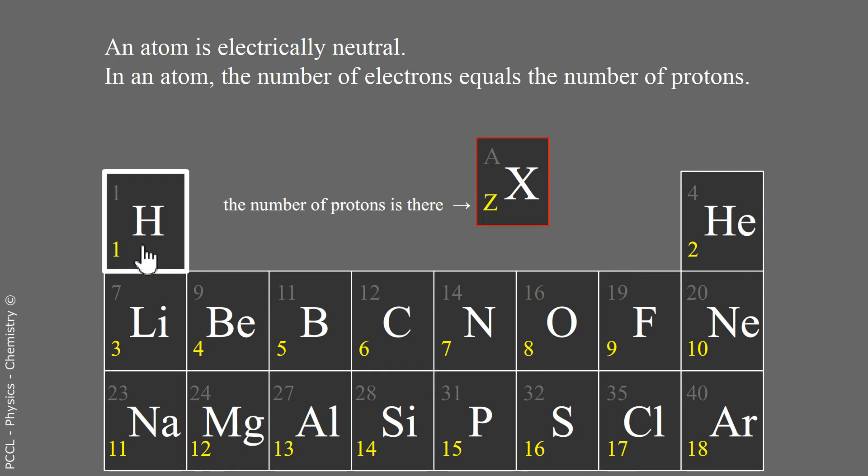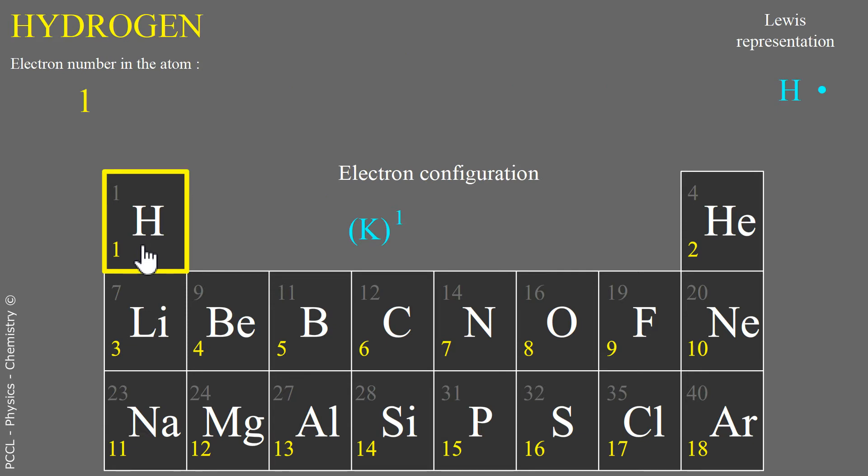H Hydrogen. It is the smallest atom. It's on the first row, which corresponds to shell K. It is schematized here with this Lewis diagram. There is only one dot next to the element symbol because the atom has only one electron. It is a valence electron.